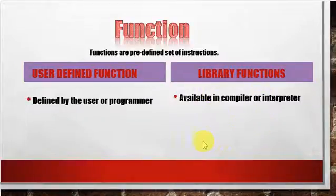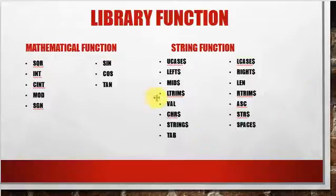A library function is also further divided into two types. They are mathematical function and string function. Mathematical functions are related to math. This function can do some math in program. For example, sqr function can return the square root of given number.